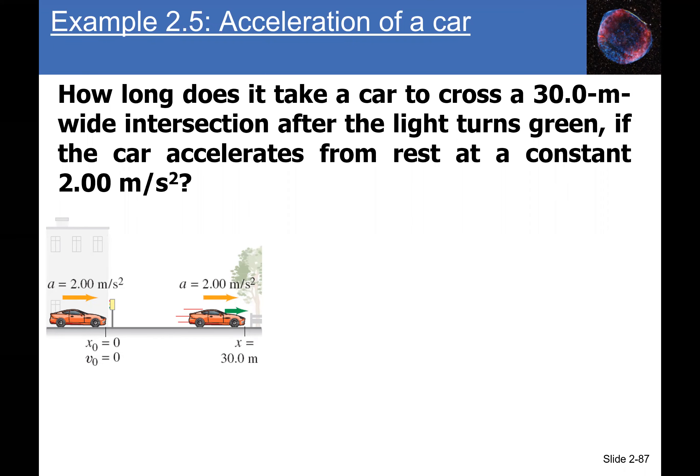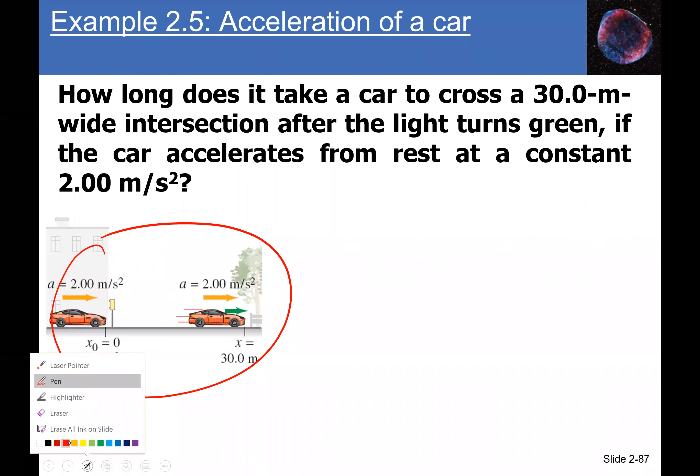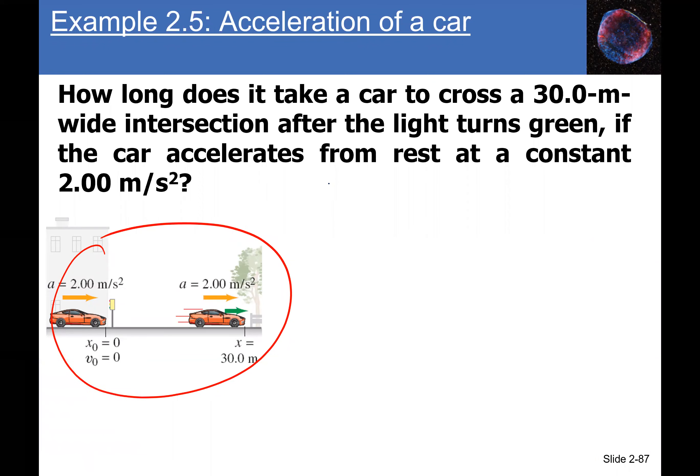Let's start solving some kinematic problems with constant acceleration. Here's an example: how long does it take a car to cross a 30-meter wide intersection after the light turns green if the car accelerates from rest at a constant 2 meter per second squared acceleration? What we do here is make a rough sketch and then a table of what's given.